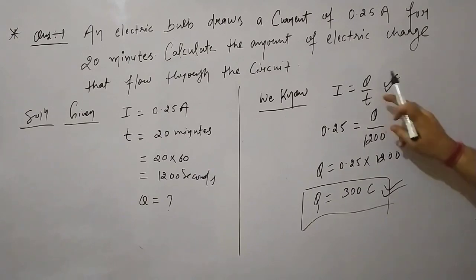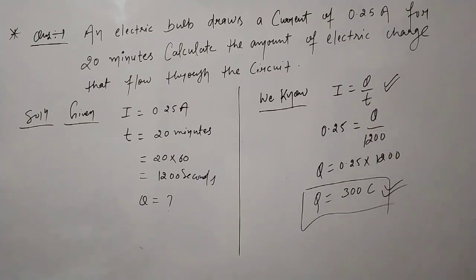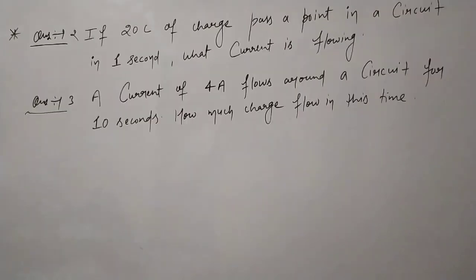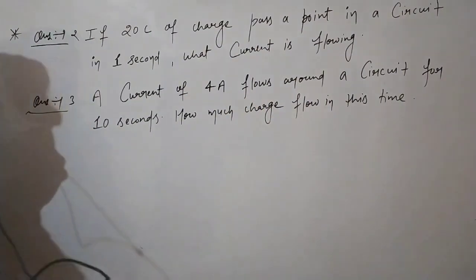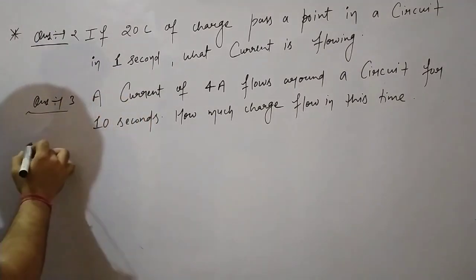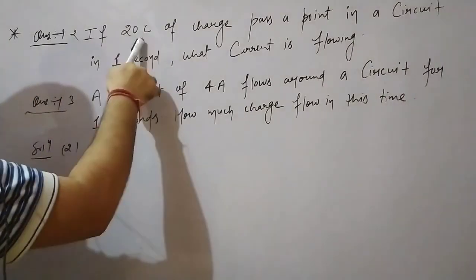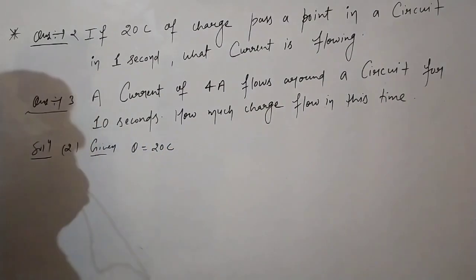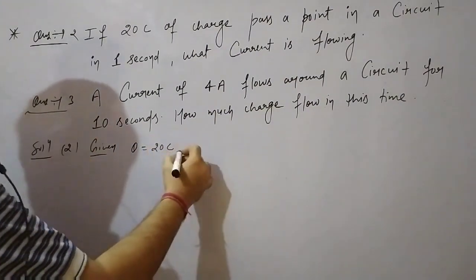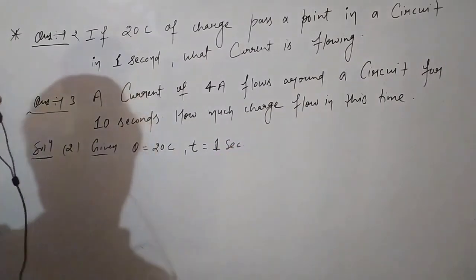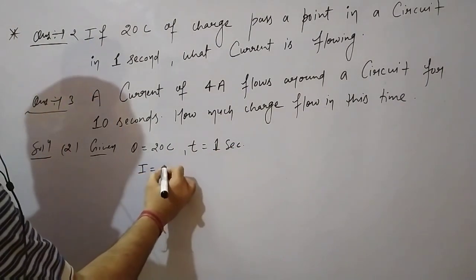We denote electric current with the symbol I. I is equal to Q divided by T, where Q denotes charge and T denotes time. So I = Q/T. This means flow of charge with respect to time is known as electric current.